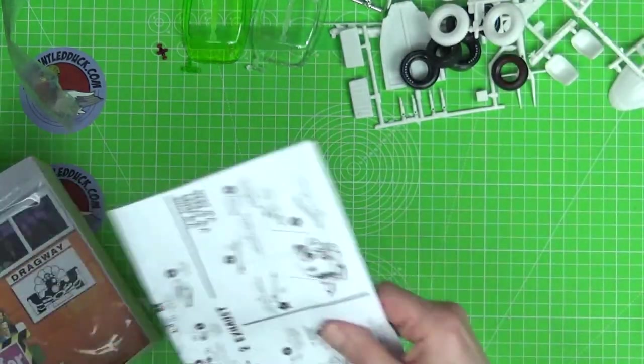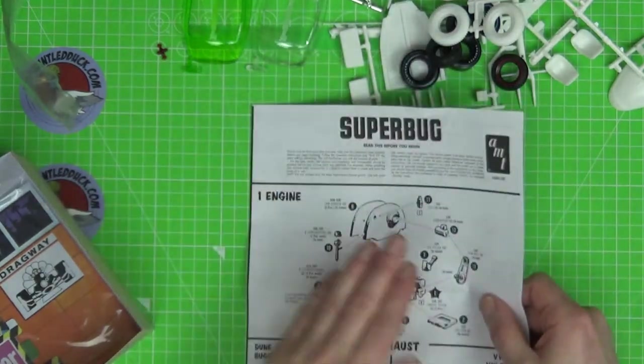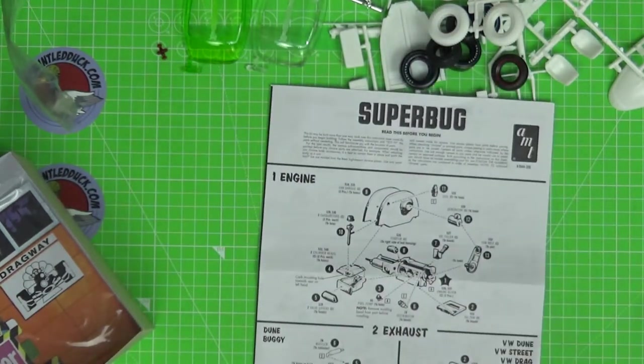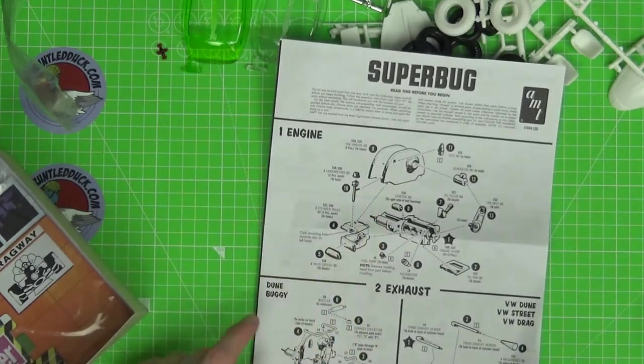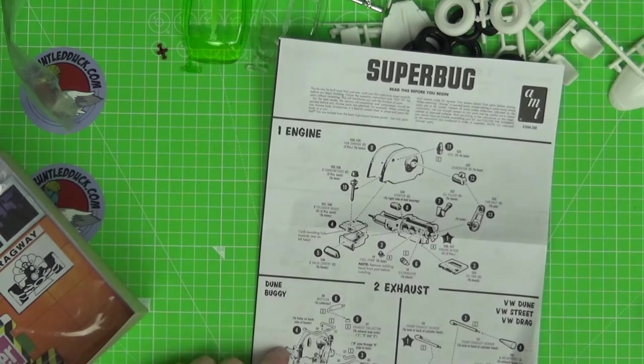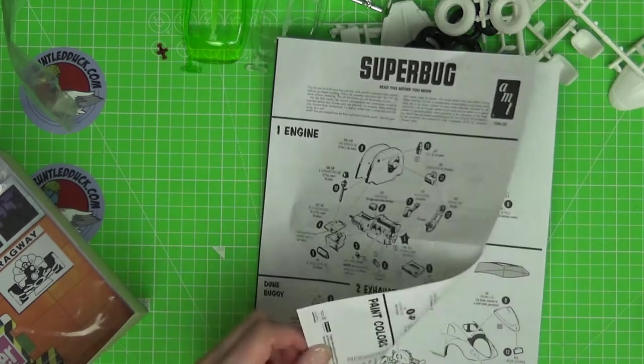So that's not a bad little kit. We've got some instructions. It's a Superbug. So yeah, it looks like okay, so we've got the engine's gonna be the same. Then we've got a dune buggy setup or we've got a street or VW drag setup.